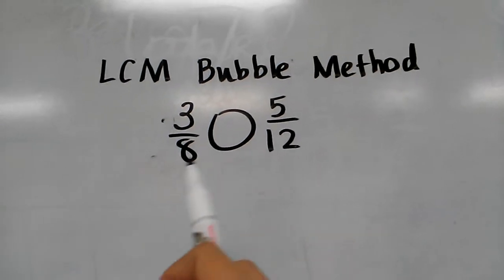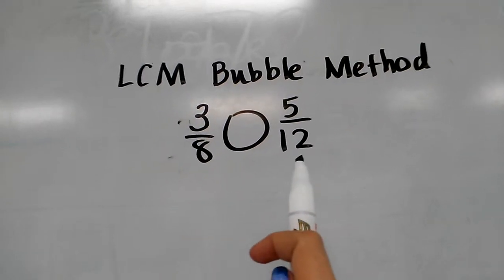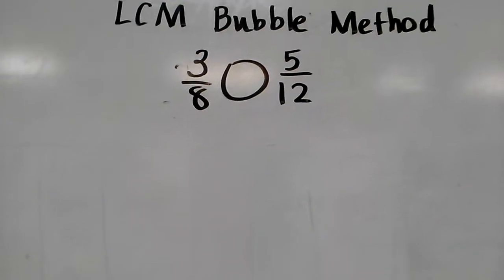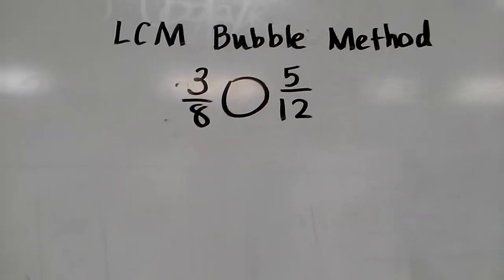Right now these are very difficult to compare because they have different denominators, so it's hard to tell which one is greater and which one is less. So we would use the bubble method to find a common denominator.